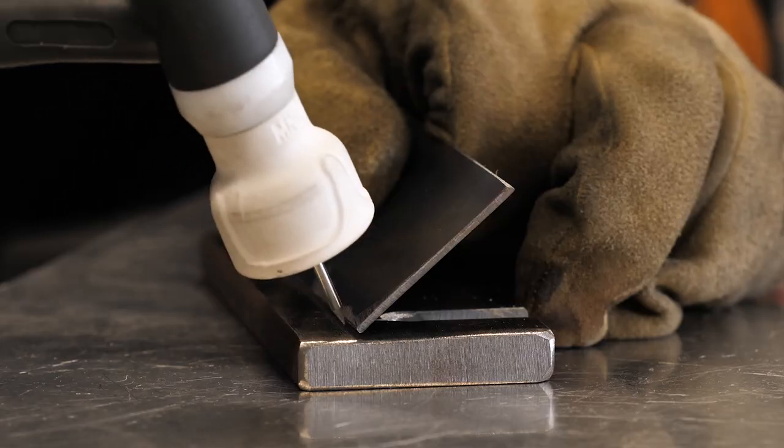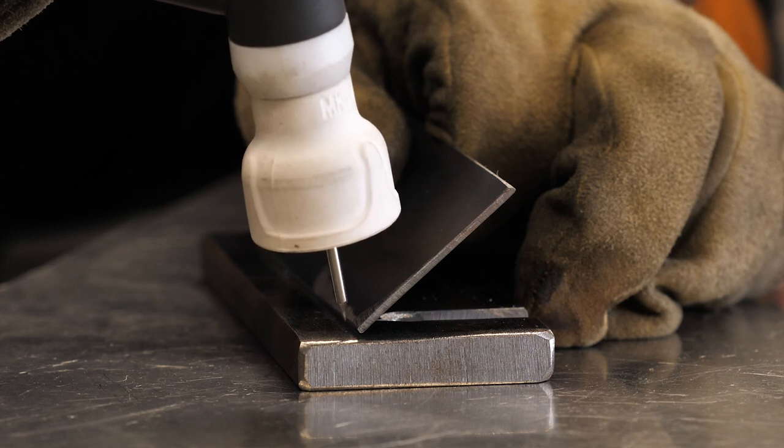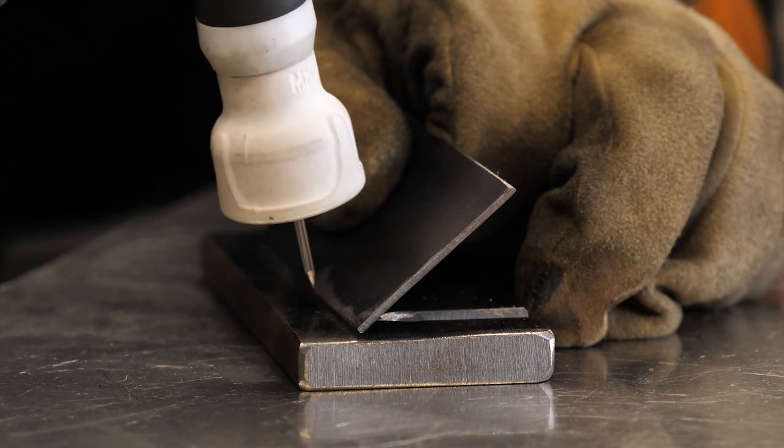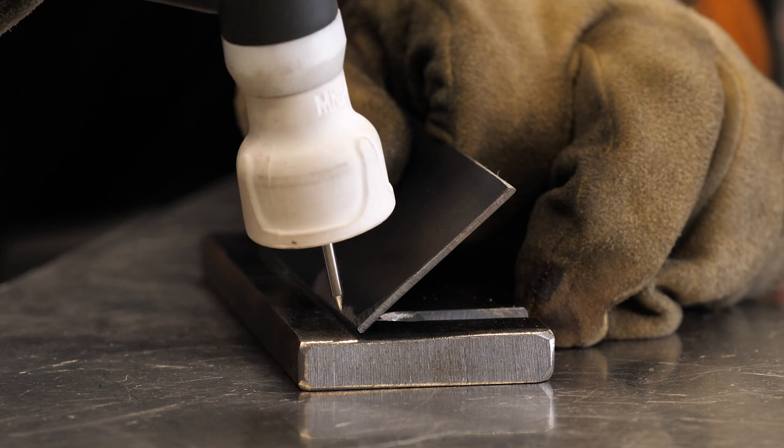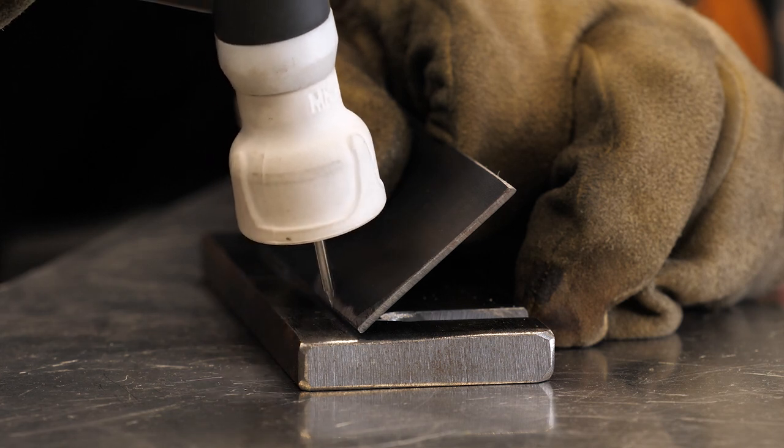One exception to this rule is when we're welding a thicker material to a thinner one. In this case we should be focusing the majority of our heat input into the thicker material and only spend just the required amount of time moving this heat into the thinner material in order to produce the desired weld.